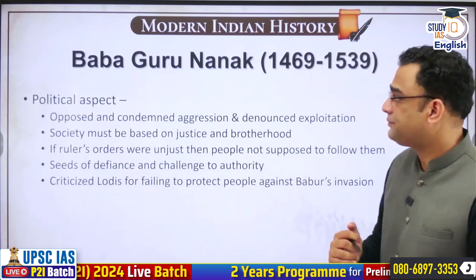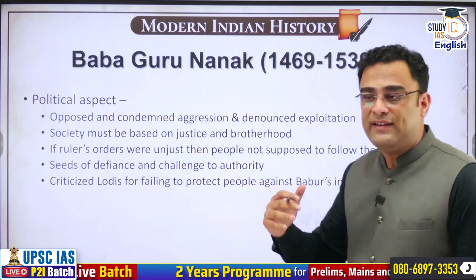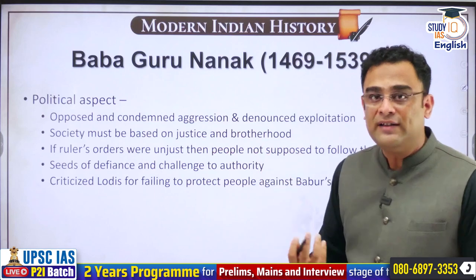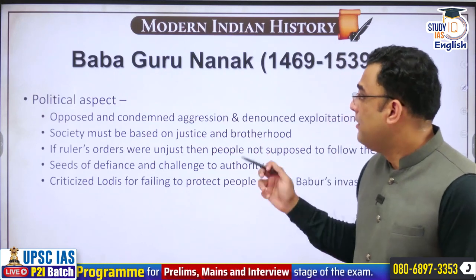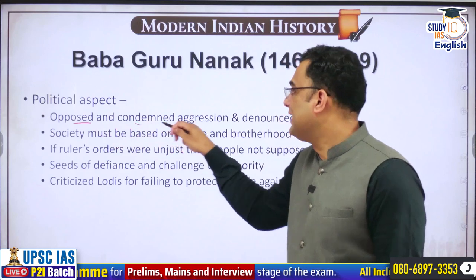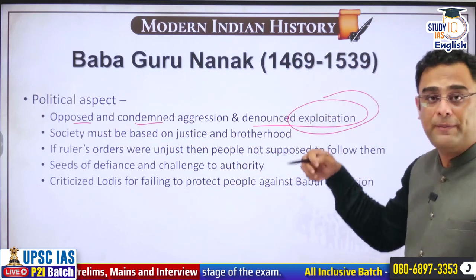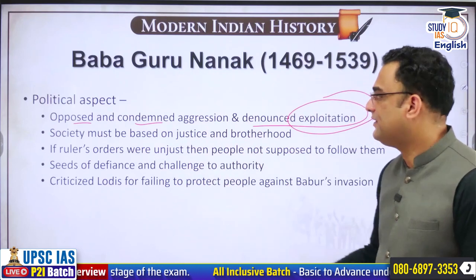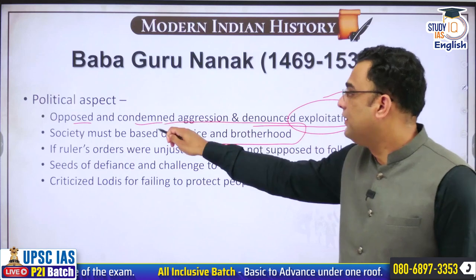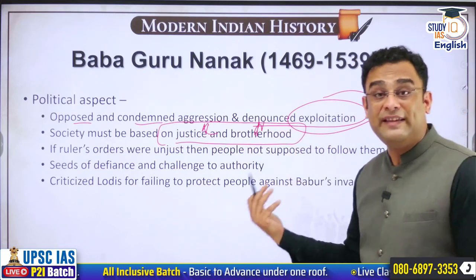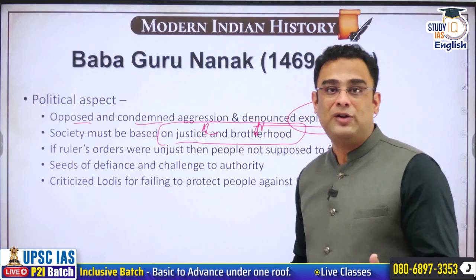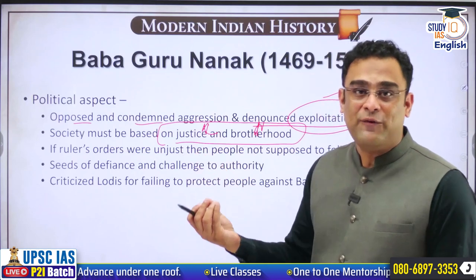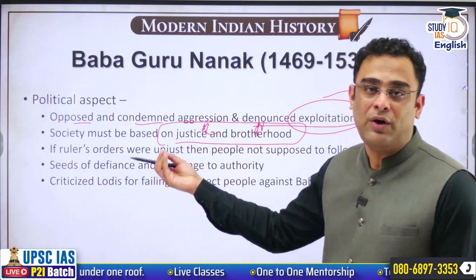On the political aspect, Baba Guru Nanak opposed and condemned aggression and denounced exploitation of people. He said society must be based on justice and brotherhood. These ideas — justice, brotherhood, equality — so central to our modern day and times, can be found in these great thinkers of medieval and ancient India. If rulers' orders were unjust, he said, people were not supposed to follow them. This is very revolutionary for that time — during medieval times, the state was all-powerful, there were no human rights, no media, no independent institutions. And yet he said: if the orders of the state are unjust, people are not supposed to follow them. Many scholars see in this the seeds of defiance and challenge to authority that is not moral, is exploitative, or is unjust.